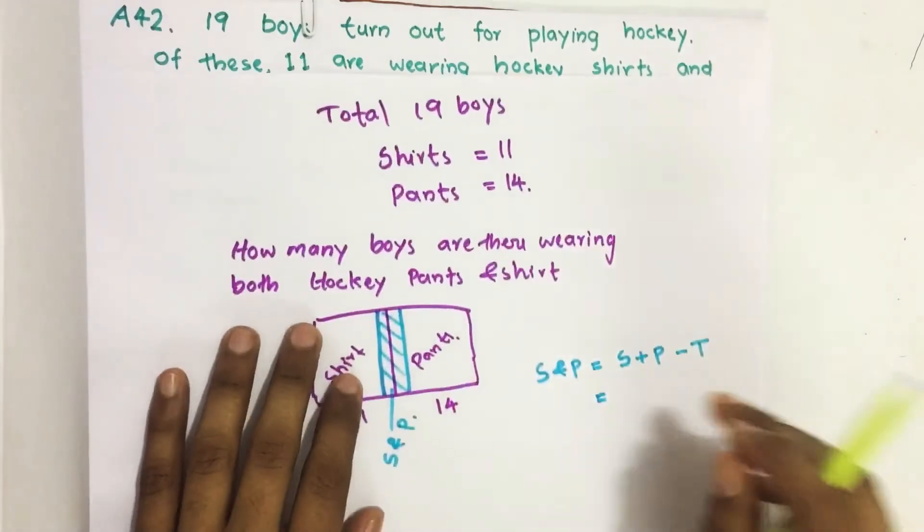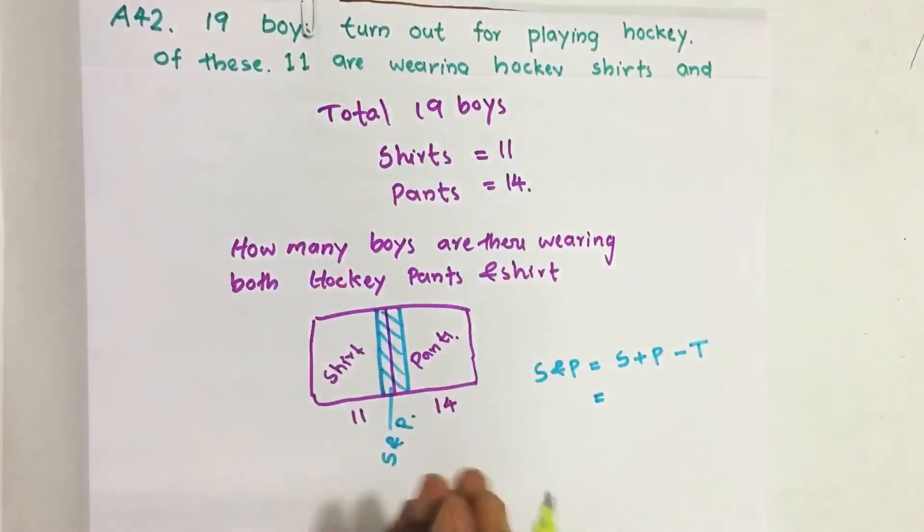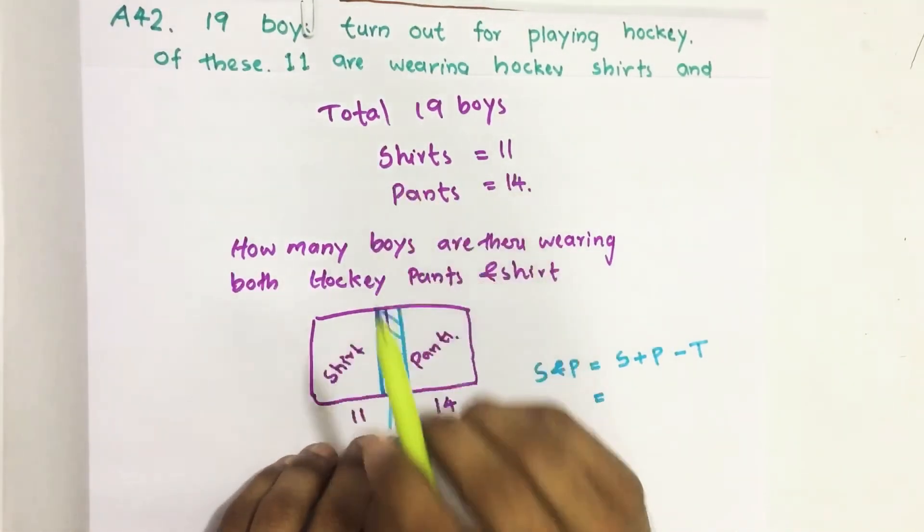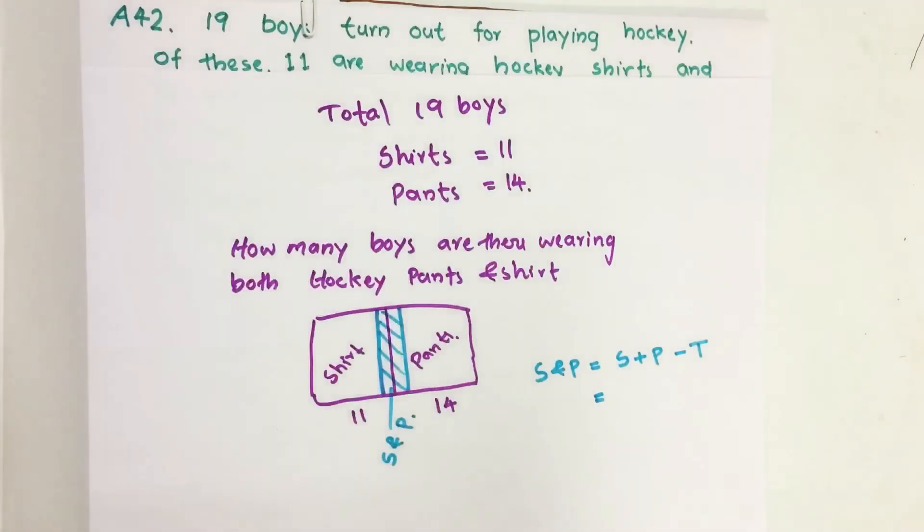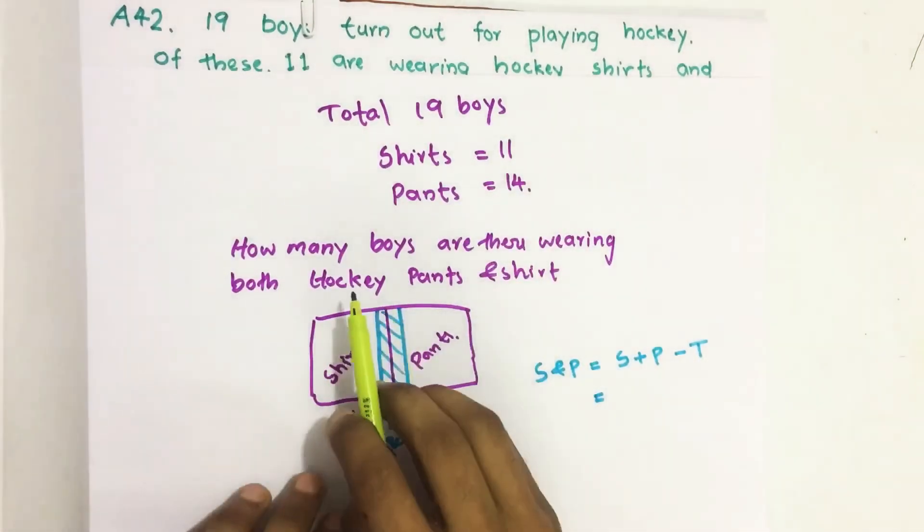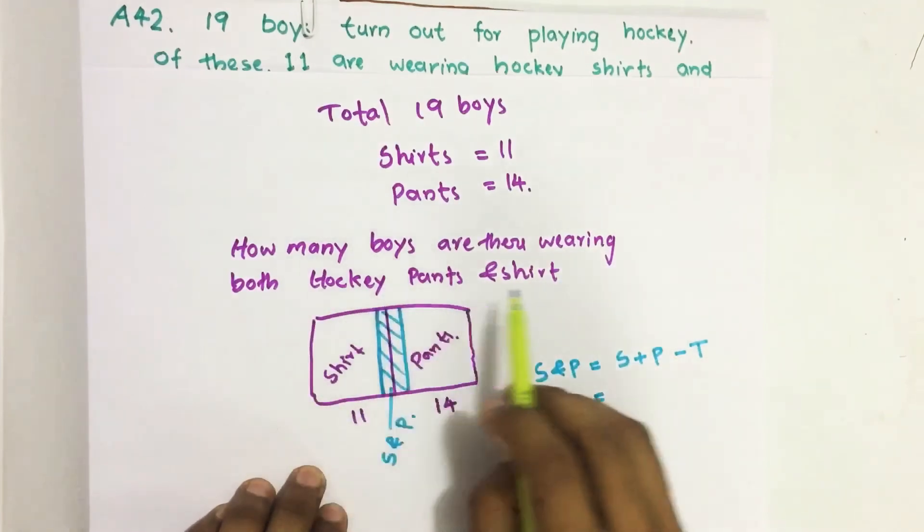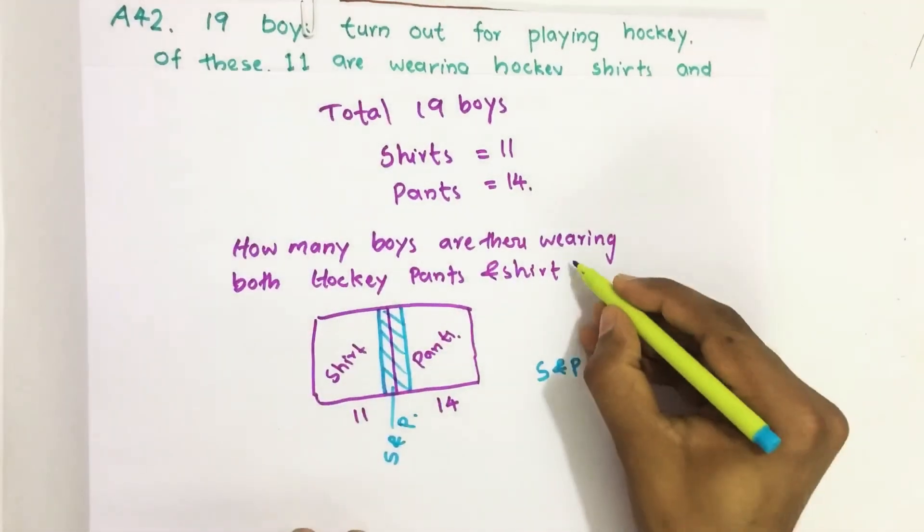So here total 19 boys are playing hockey, out of which 11 are wearing hockey shirts, 14 are wearing hockey pants. How many boys are there wearing both hockey pants and shirt? That is what we have to find.